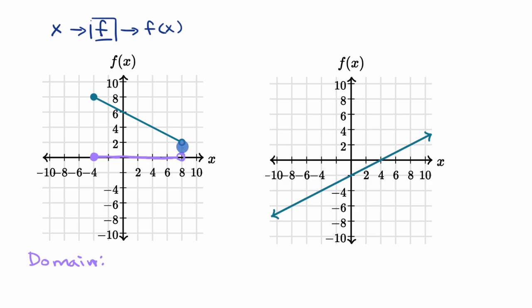Just as a reminder, the open circle means you can get close to it, but you don't include that number, while the closed circle means that you do include it.